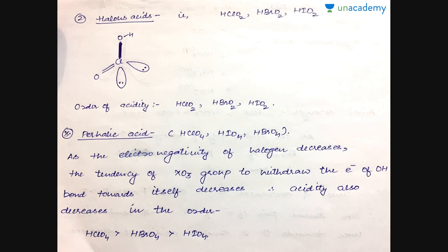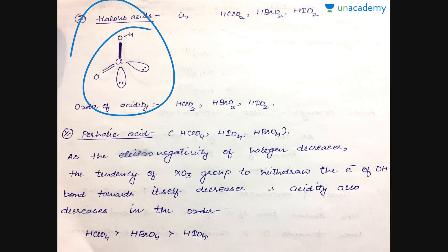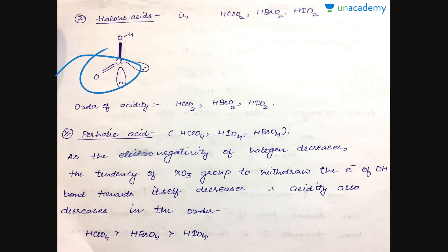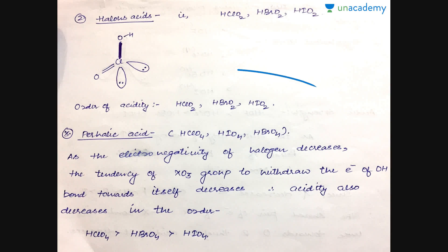The next category is halous acids, formed only by chlorine, bromine, and iodine — fluorine does not form fluorous acid due to its very high electronegativity. The structure has a tetrahedral arrangement where the halogen atom is bonded to one doubly bonded oxygen and one OH group. The order of acidity is HClO₂ > HBrO₂ > HIO₂, for the same reason that decreasing electronegativity places more electron density on oxygen, freeing the proton.